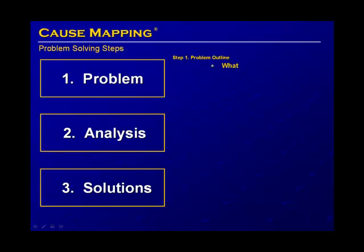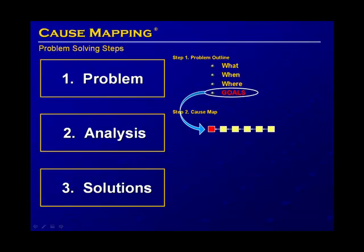The cause mapping methodology that we use, the root cause analysis method, defines a problem and frames it within four basic questions. What's the problem, when did it happen, and where did it happen? And then everything is linked to the impact to the goals. That provides the beginning of the analysis step so that you can ask some simple why questions. You're starting with the negative consequence or the negative impact to the goals, and then asking why questions as you read across the page.